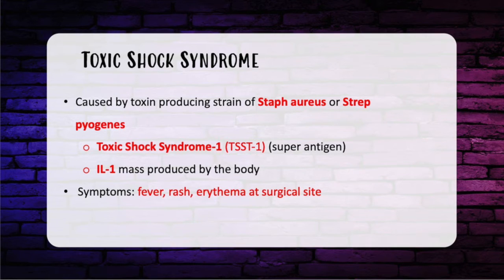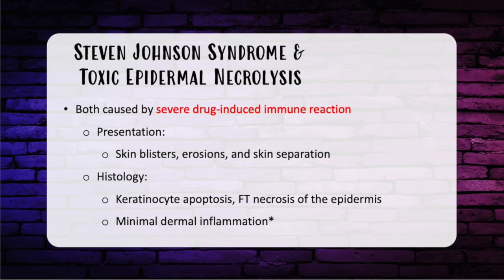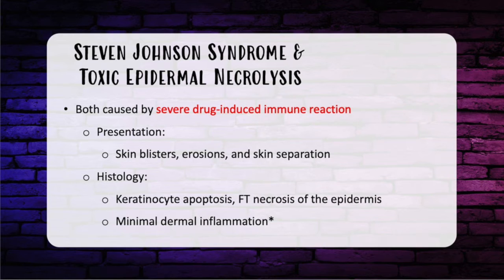Steven Johnson Syndrome and TEN, or Toxic Epidermal Necrolysis, are both caused by a severe drug-induced immune reaction. Think of a patient who gets a medication and then develops systemic symptoms like fever, mucosal inflammation, and a painful generalized vesiculobullous rash. The skin shows blisters, erosions, and skin separation. With both, the main findings are in the epidermis layer — on histology you'll see very little dermal inflammation, keratinocyte apoptosis, and full-thickness necrosis of the epidermis.